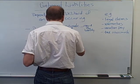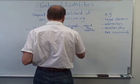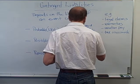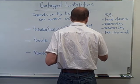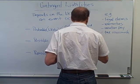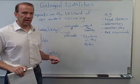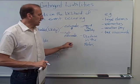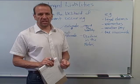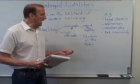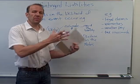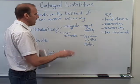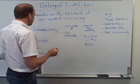If we cannot estimate the dollar amount, then we're going to disclose in the notes to the financial statements. If it's probable but we can't estimate the dollar amount — we're just unsure — we'll still disclose it, so people looking at our financial statements can see that there are contingent liabilities. We might put a range in there, or just disclose what it is and give some information on the actual contingent liability.